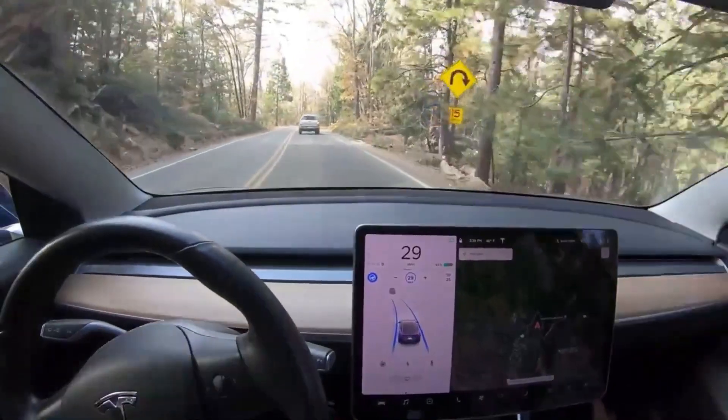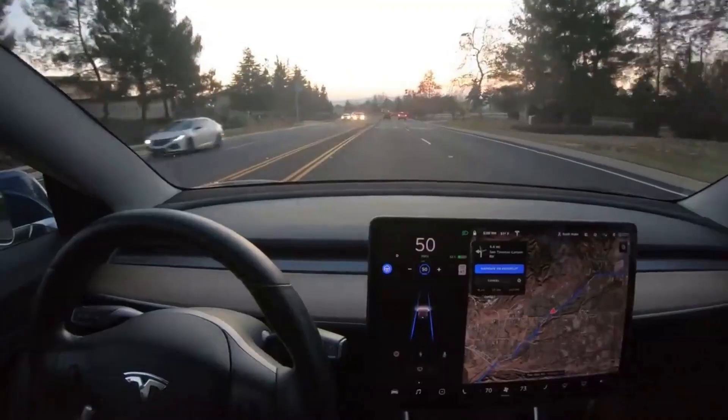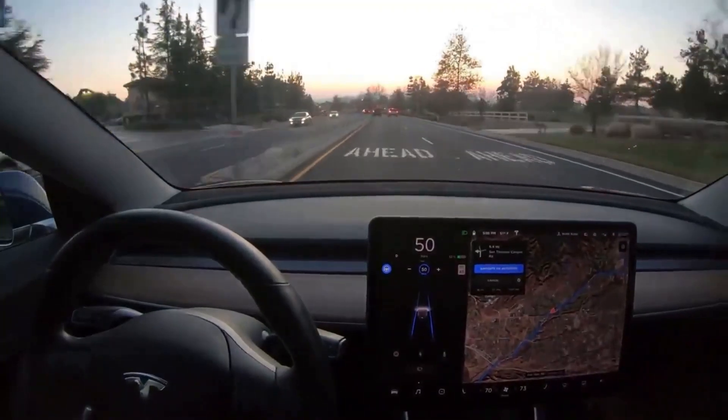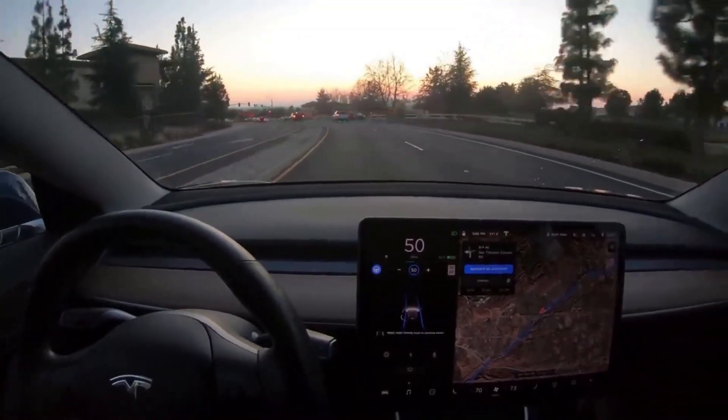This is the same computer brain that goes in every Tesla vehicle and enables semi-autonomous driving. At the moment, with FSD Beta, the car can drive itself through pretty much any situation. It's not perfect yet, but it's getting there.